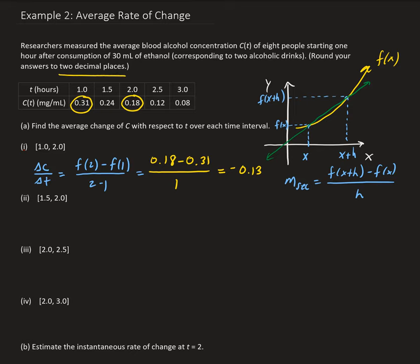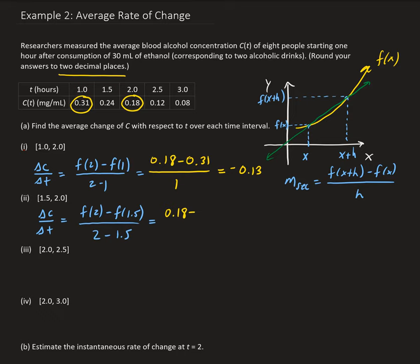So that's the average rate of change of C between t equals 1 and t equals 2. For the next interval, we have delta C over delta T equal to f of 2 minus f of 1.5, divided by 2 minus 1.5. At 2 we get 0.18, and for 1.5 it's 0.24. We divide by 0.5, and we end up getting negative 0.12.